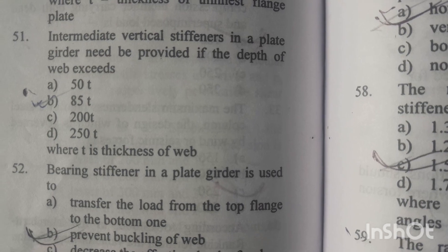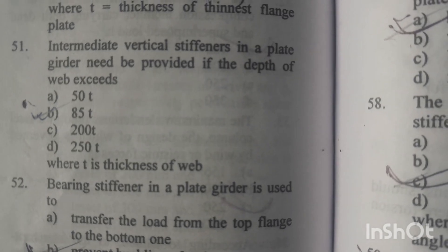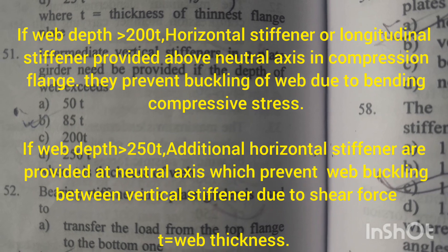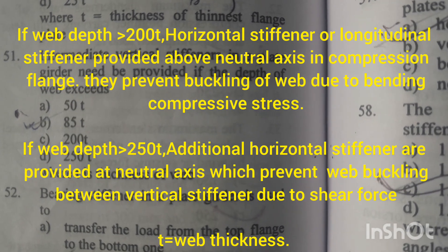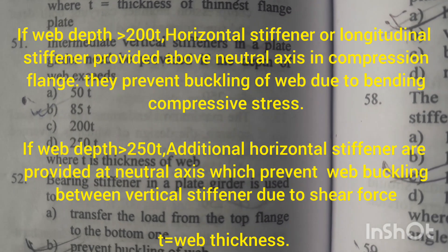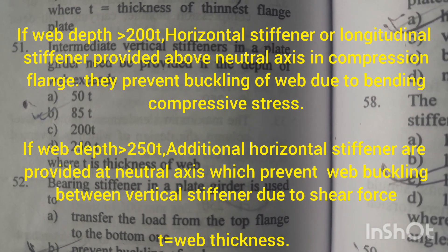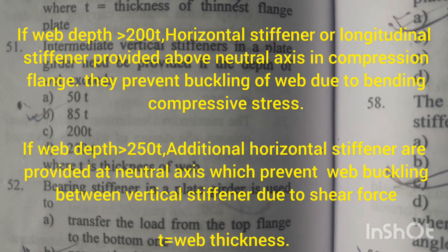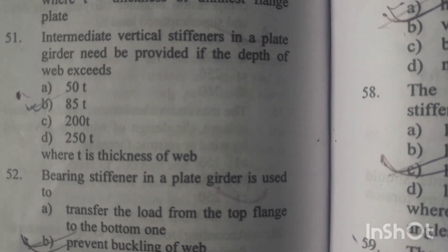Option B is the right answer. If the depth of the web exceeds 200T, then horizontal or longitudinal stiffeners are provided. And if the depth of the web exceeds 250T, then additional horizontal stiffeners are provided.